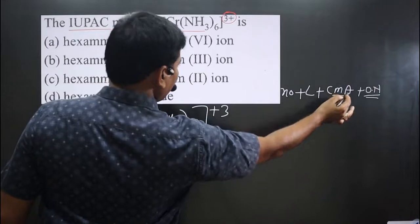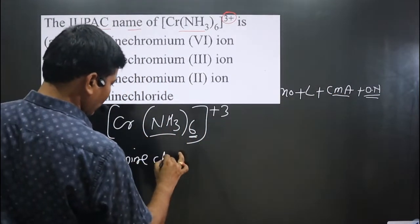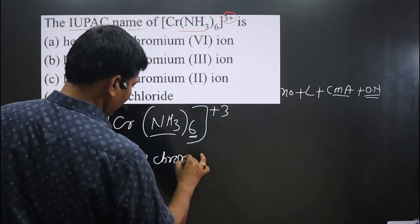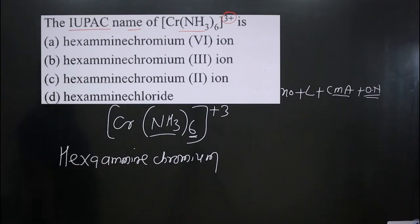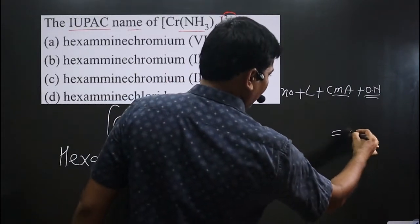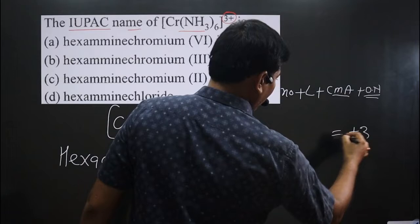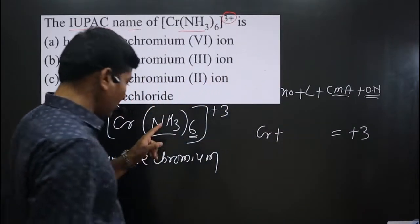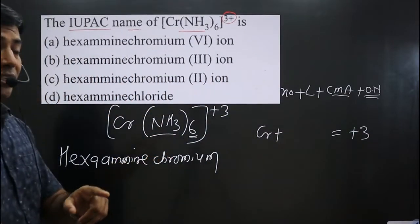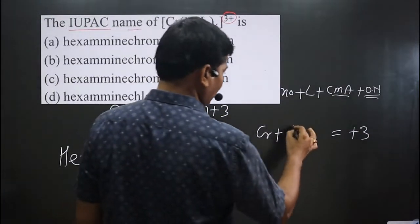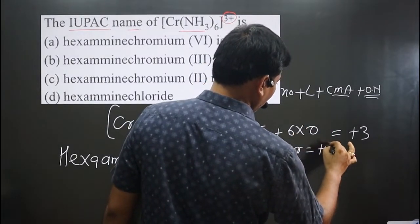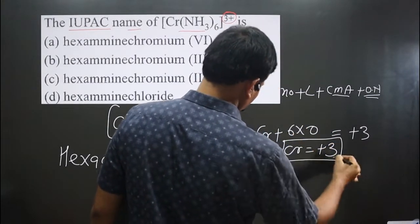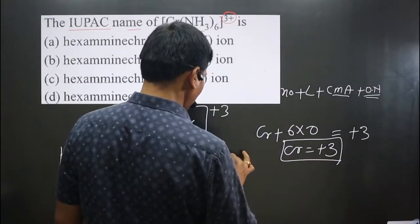Then we have the central metal atom — since it is a cationic complex, we use the common name: chromium. Now we calculate the oxidation number. The overall charge for the complex is plus 3. Chromium is present, and the neutral ligand has an overall charge of always 0, so 6 multiplied by 0. Therefore, chromium is in the plus 3 oxidation state.